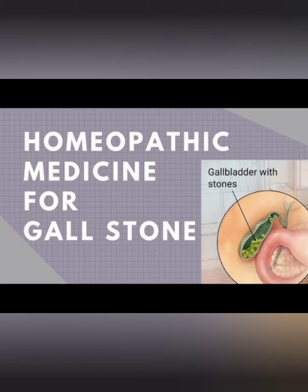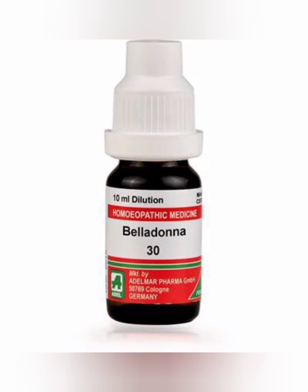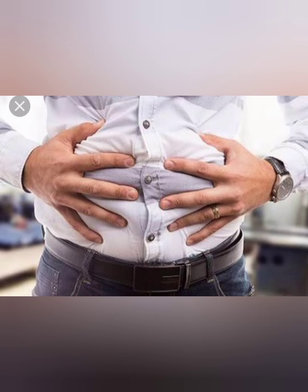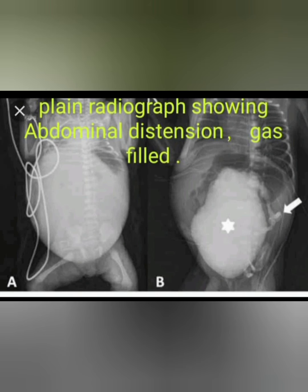Homeopathic medicine for gallbladder stone. 1. Belladonna 30 is a very effective homeopathic medicine for acute gallstone. 2. Chyna. Chyna is an excellent remedy for acute pain in the gallbladder when the abdomen is bloated with excess gas. The whole abdomen is full of gas with painful distension.